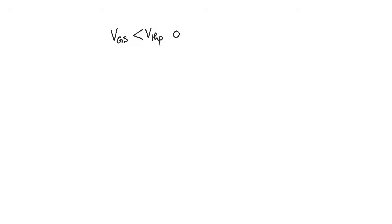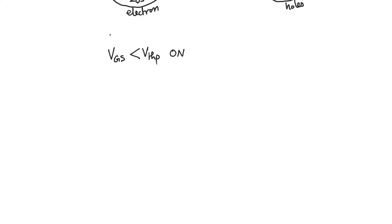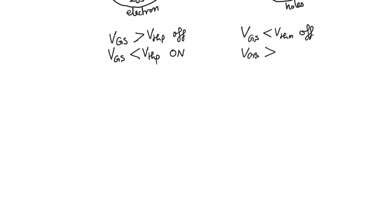Everything is kind of the opposite in a PMOS relative to an NMOS. So it is important to ask: how do we determine if a PMOS is on, and whether it is saturated or ohmic? For a PMOS to be on, its VGS has to be less than V-threshold-P. If VGS for the PMOS is greater than V-threshold-P, then it is off. This is exactly the same inequality as for the NMOS except the direction is reversed — and this makes sense, since we need the opposite kind of voltage to attract the opposite kind of charge carrier.